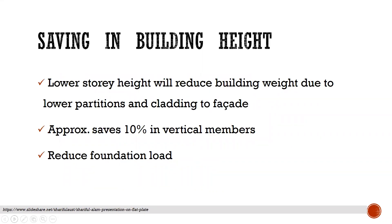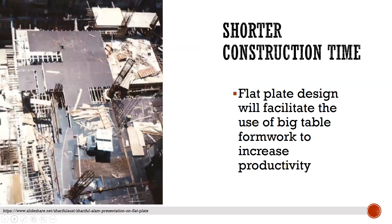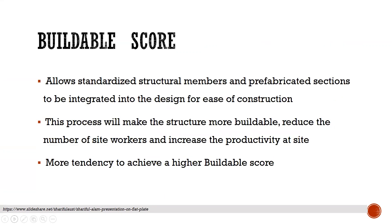Saving in building height results in lower storey height, which reduces building weight due to lower cladding loads on the facade — a significant saving. Shorter construction time: flat plate design facilitates the use of large table formwork to increase productivity. Buildable score: it allows standard structural members and prefabricated sections to be integrated into the design for ease of construction. This process makes the structure more repeatable, reduces the number of site works, and increases productivity. It also tends to achieve a higher buildable score.